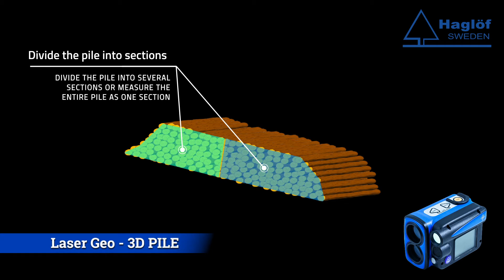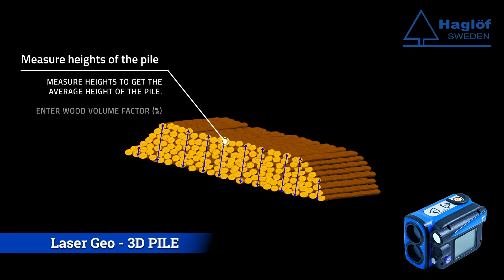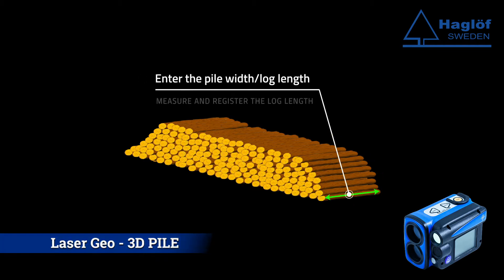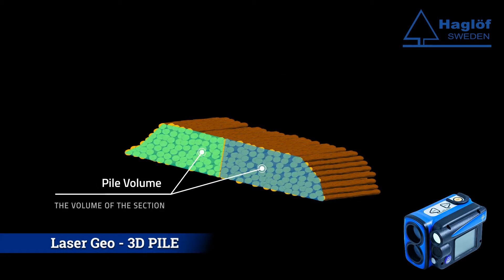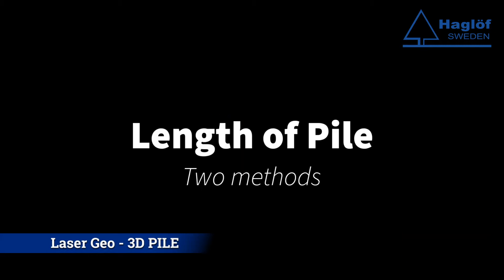Heights are measured at regular intervals along the entire pile. The measurement of the pile is finished by entering a wood volume factor in percent and the width — the width is the average length of the logs in the pile. The volume of the pile is calculated per section and as a total, and displayed in the Laser Geo. Now the two different methods that can be used to measure the length of the pile will be shown.